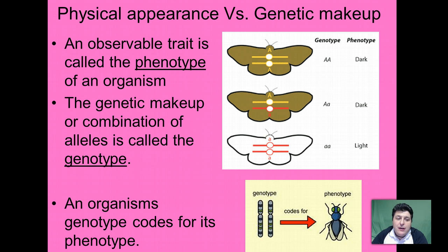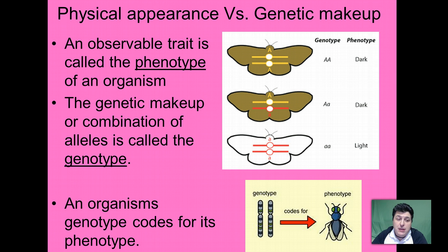Our physical appearance is determined by our genes. The term we use to describe that physical appearance — that observable trait — is what we call the phenotype. The phenotype is the physical description of that organism. Whereas the genes that give you that physical appearance are called the genotype — it's the type of genes.